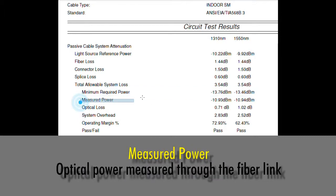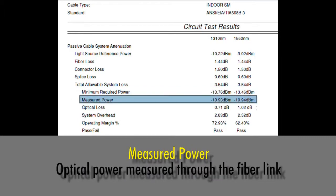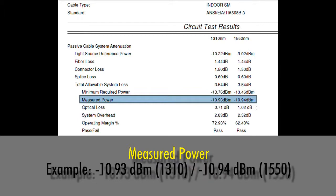Measured power is the actual measurement that was taken when the meter and source were connected to the link under test — in this case, port number 1. As you can see, we have a value of minus 10.93 dBm.